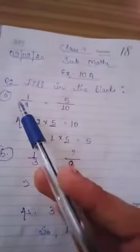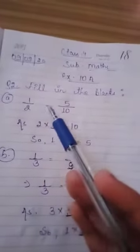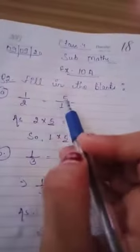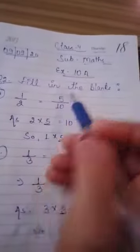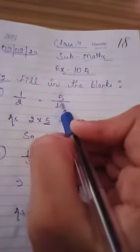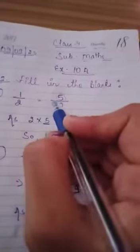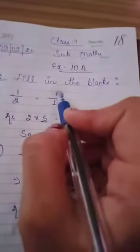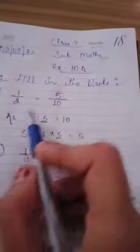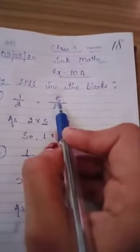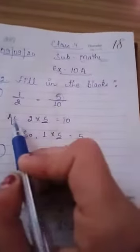Fill in the blanks. The question is 1 upon 2 is equals to 5 upon 10. Means here na a 5 suppose karna nahi diya hai. Suppose karna nahi blank hai. Okay upon 10. Toh hume is blank ko fill karna hai. Yahaan pere 5 kaise aya?